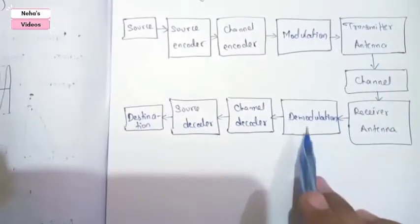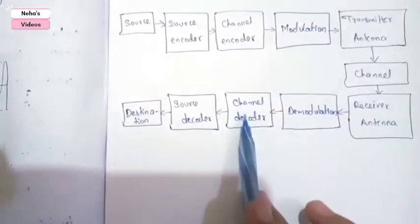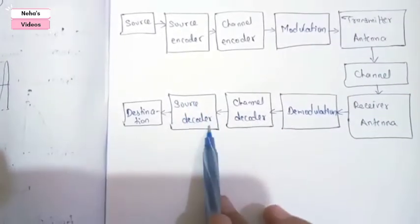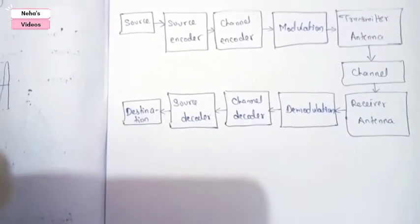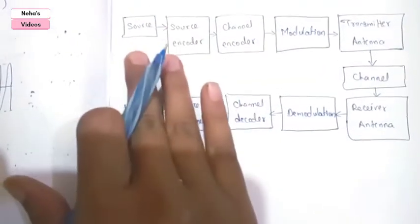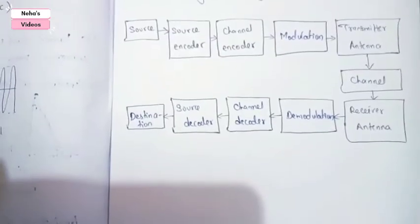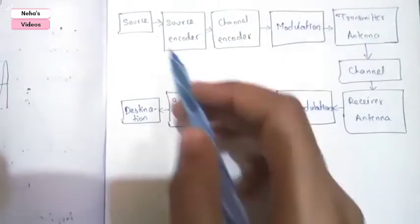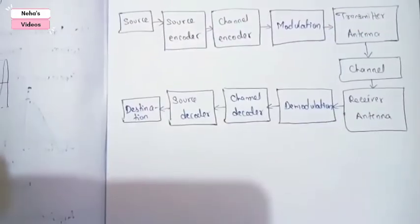This process will be in reverse. First we did modulation, now we will do demodulation. This is channel encoder, here we will do channel decoding. This is source encoder, we will do source decoding, and this is the final destination signal where whatever signal was passed through the source to these blocks, in the last destination we will get the same signal.